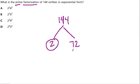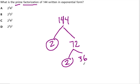72 is even, so I'm going to use 2 again. 2 times 36 is 72. And 36 — it's even again, so I'm going to use another 2, and it's 2 times 18.